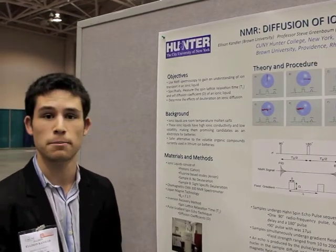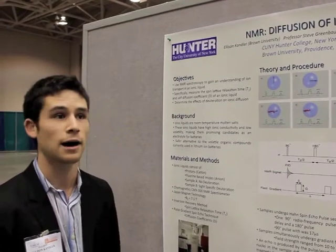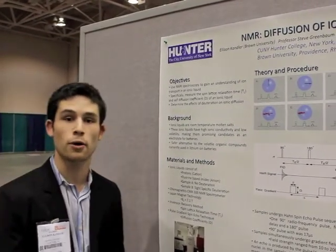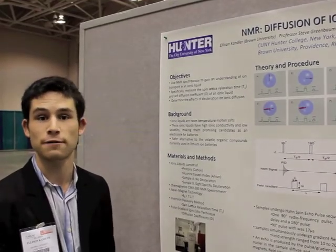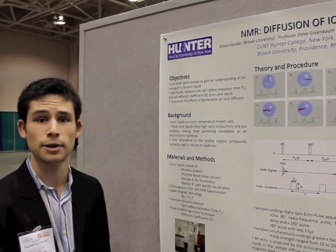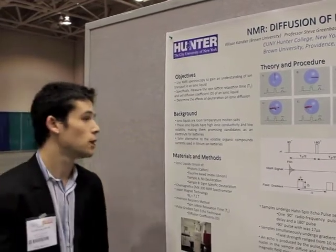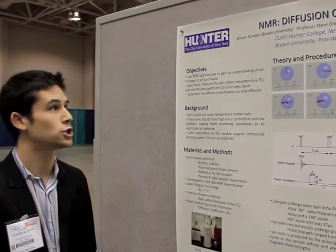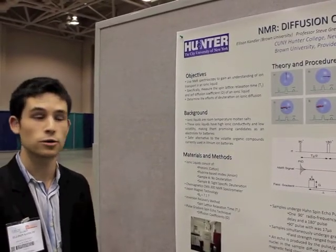These ionic liquids are of big importance because they're being considered as a possible electrolyte for batteries. They obviously have high ionic conductivities, but importantly, they have very low volatility, which makes them a very safe electrolyte, especially for large-scale application in a car battery, for example. We use two different NMR techniques to study the diffusion on the hydrogen nucleus.